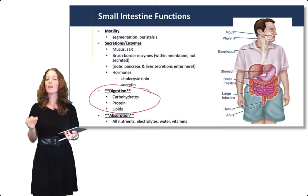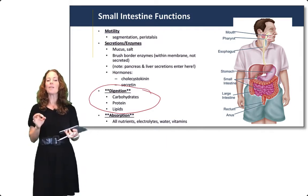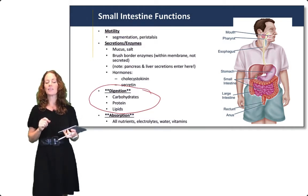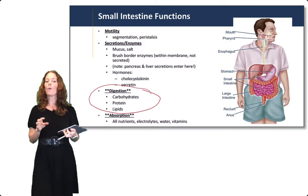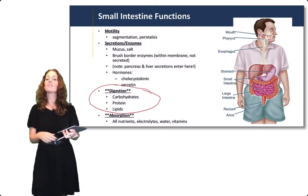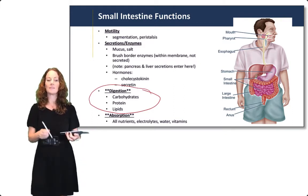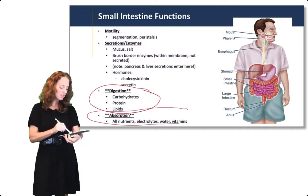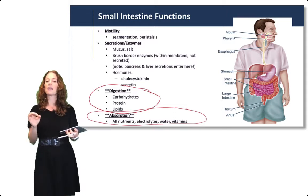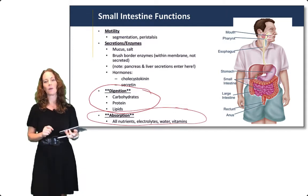What about absorption? Also everything! The small intestine does the majority of absorption for the GI tract. All nutrients, electrolytes, water, and vitamins are absorbed here in the small intestine. So both digestion and absorption are primarily occurring in the small intestine.